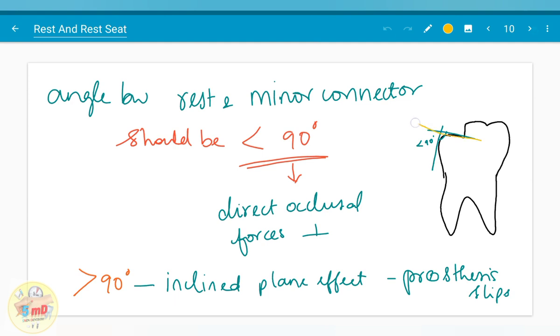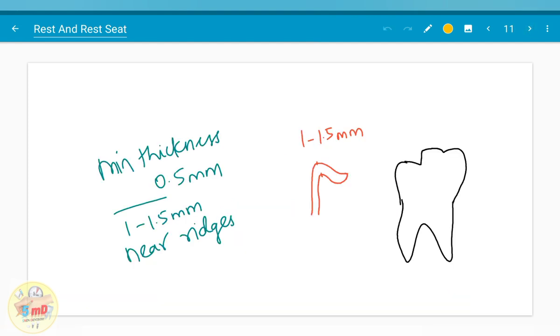The angle between the rest and the minor connector is less than 90 degrees. It helps in directing occlusal forces perpendicularly to the tooth. When the angle is greater than 90 degrees, inclined plane effect will set in and prosthesis slips. We should also remember that the minimum thickness should be 0.5 mm at least, and it is 1 to 1.5 mm near the ridges.